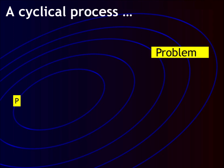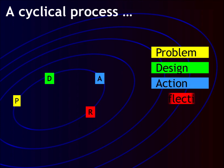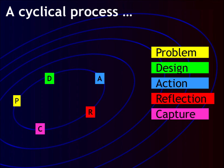You start out with a problem. Then you design a possible strategy for dealing with the problem, or at a minimum, you decide what your next step will be in tackling the problem. Then you take action — this is the core of this approach. After you have taken action, you reflect back on what happened. Usually in the first cycle, the problem is not completely resolved. In fact, quite often, new complications arise. The final step is to capture your learning. If you don't record what you learned, you will forget it and have to reinvent the wheel again and again.